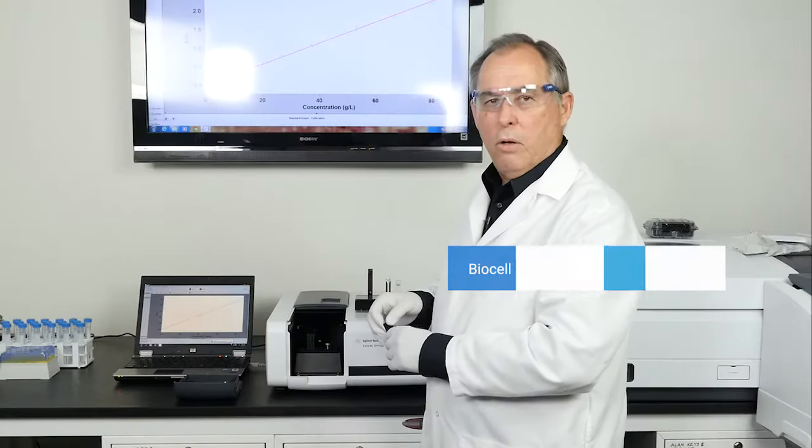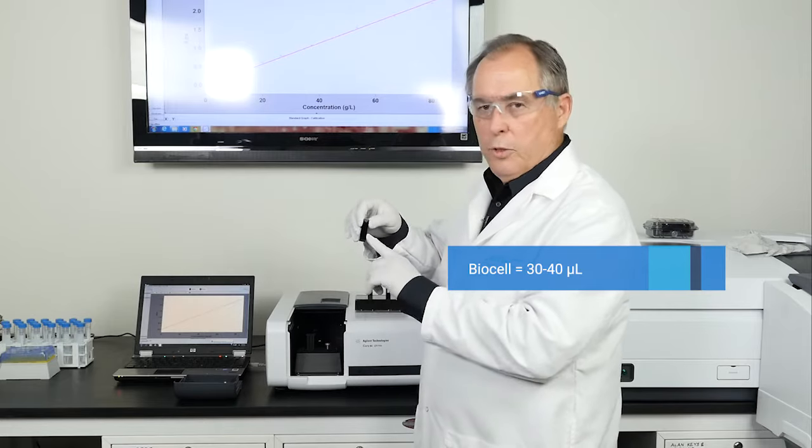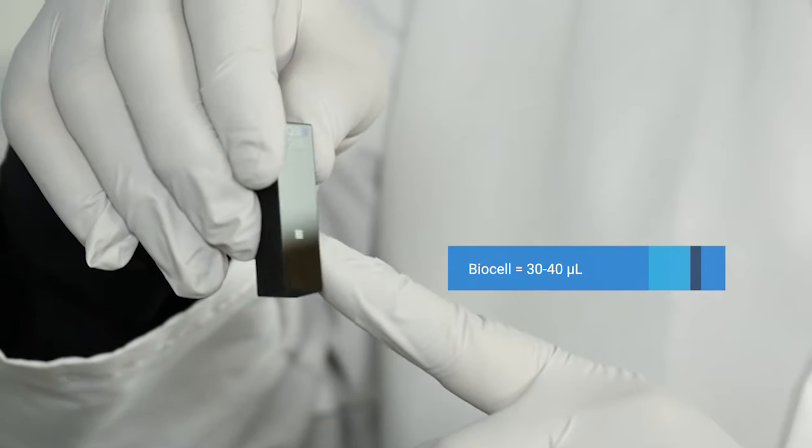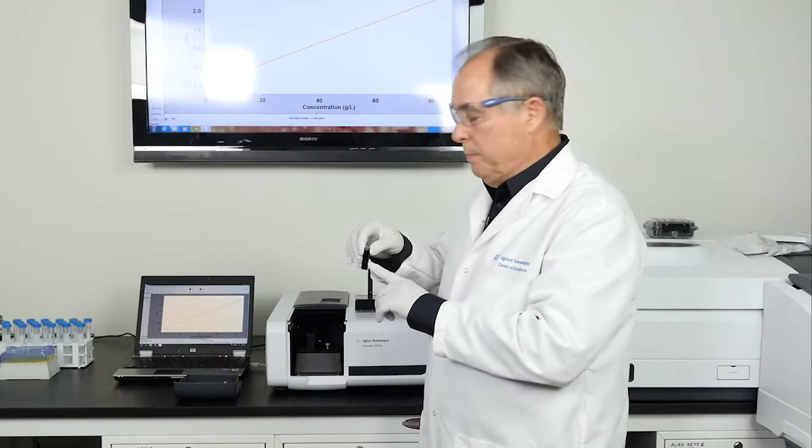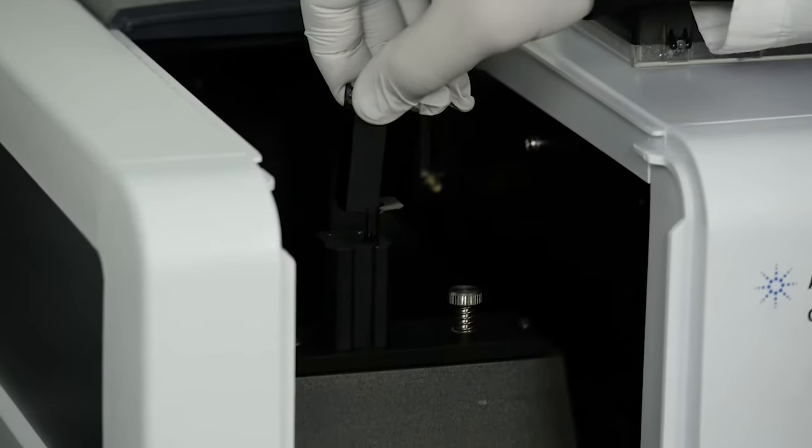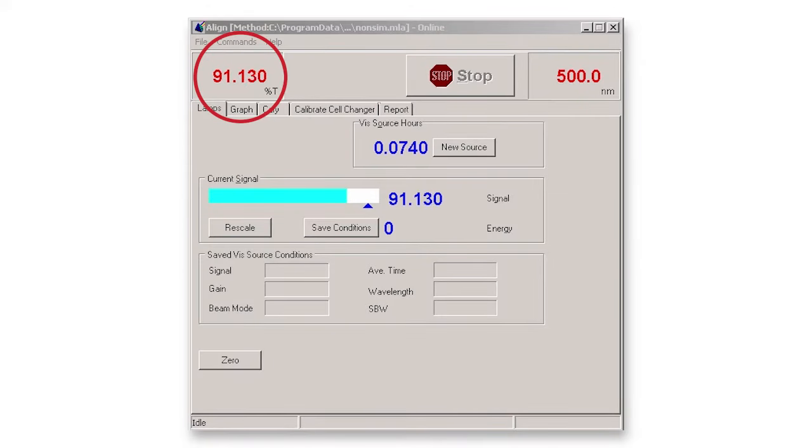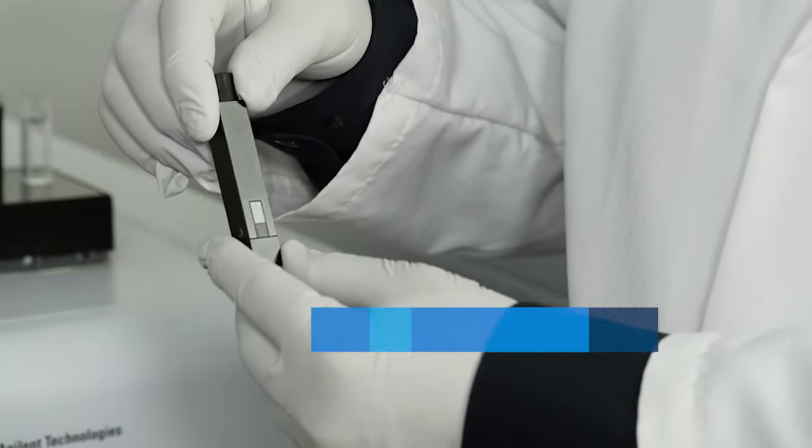The third cell we'll look at is called a bio cell. It has a very small window, it's reduced in volume to about 30 to 40 microliters, and again we'll measure this one.